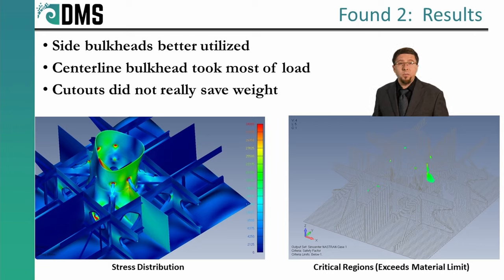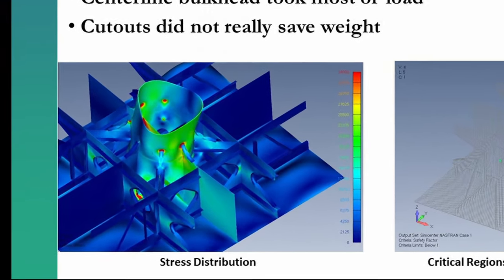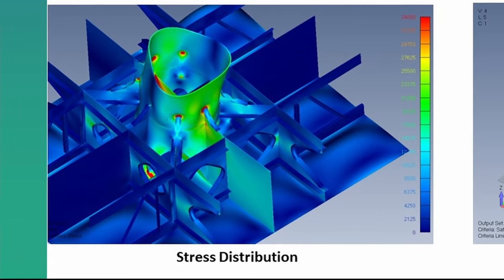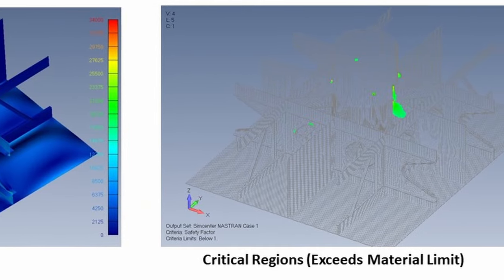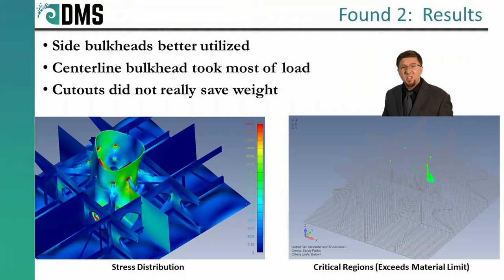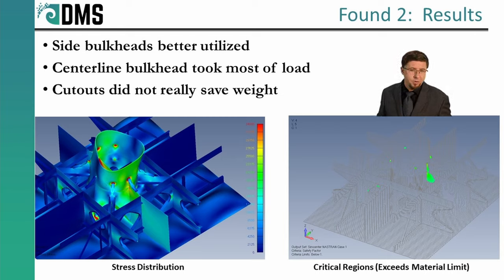So, did it work? Well, the figure on your left side shows the stress distribution, and the figure on the right side shows the critical regions that exceeded the material limits. The side bulkheads showed better utilization this time, shown with higher stresses, and the angled beams did carry some of the load. But that centerline bulkhead still took most of the load. We're on the right path, but not there yet. The cutouts in the side bulkheads may have reduced weight, but we added much of that weight back in by putting that reinforcing collar around each cutout. The total weight reduction was minimal. We saw some improvements, but no significant change to recommend foundation two over foundation number one.